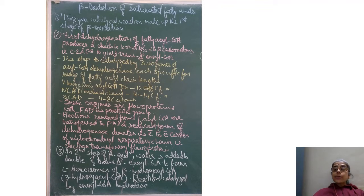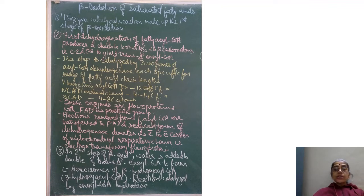Very long chain acyl-CoA dehydrogenase acts on fatty acids containing 12 to 18 carbon atoms. Medium chain acyl-CoA dehydrogenase acts on fatty acids containing 4 to 14 carbon atoms. Short chain acyl-CoA dehydrogenase acts on fatty acids containing 4 to 8 carbon atoms.